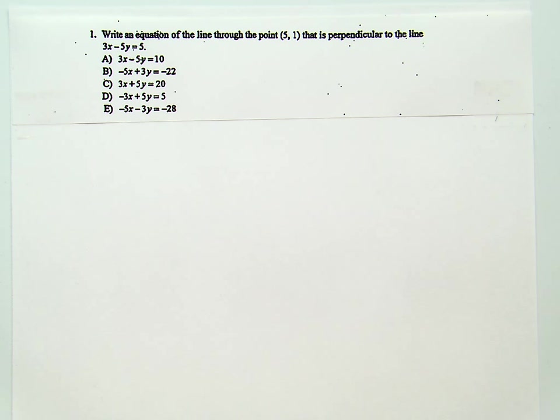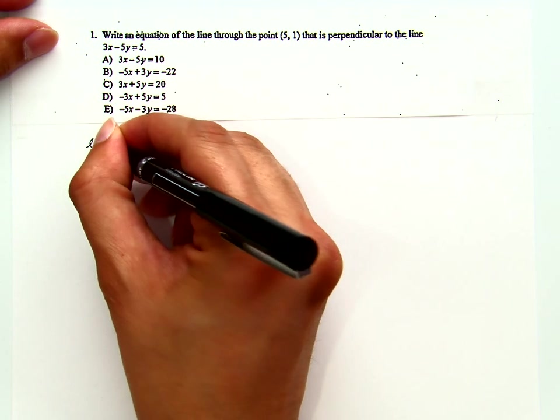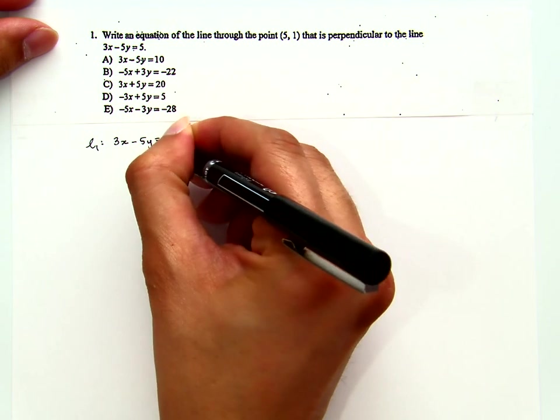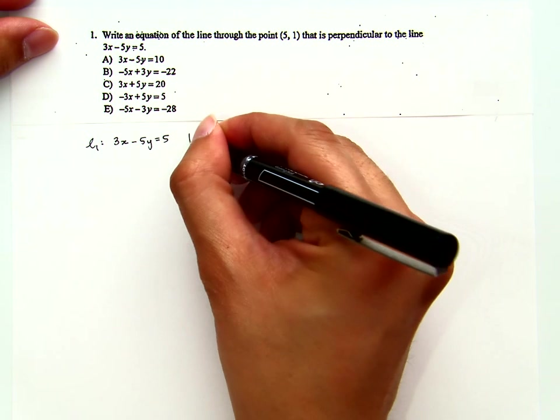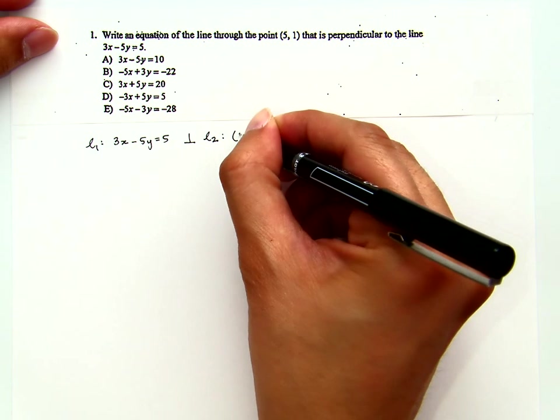The following is Fall 2008 Math 125 Department Final Number 1. Write an equation of the line through the point (5,1) that is perpendicular to the line 3x minus 5y equals 5. Now let's start. The line we are dealing with is 3x minus 5y equals 5, and we know this line is perpendicular to line 2 which passes through (5,1).